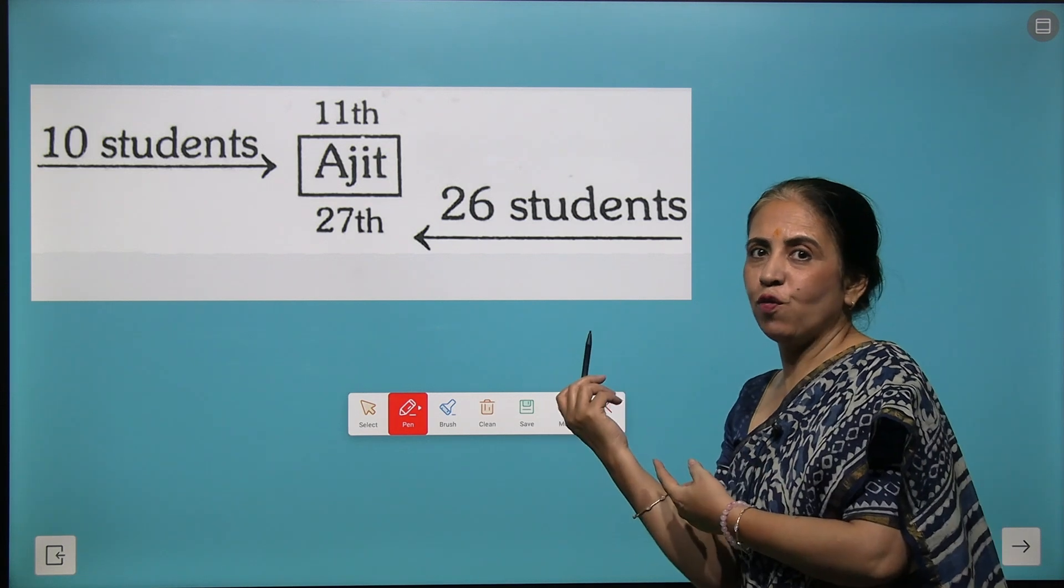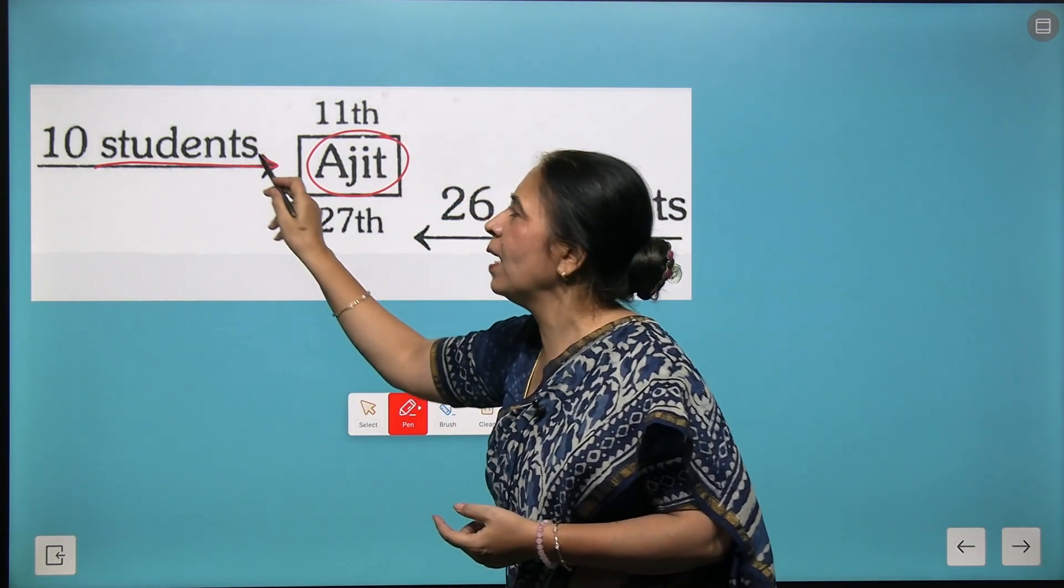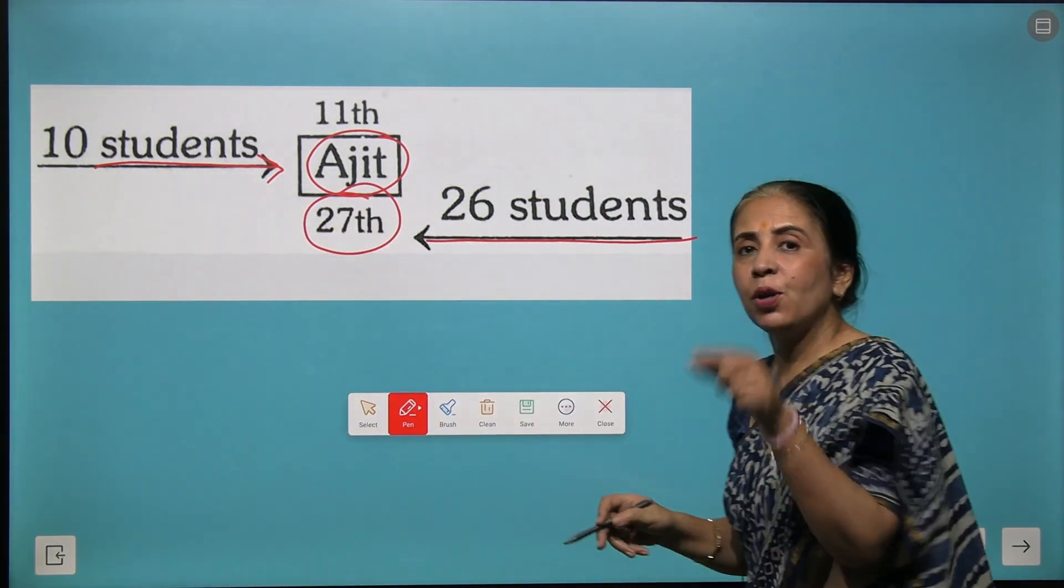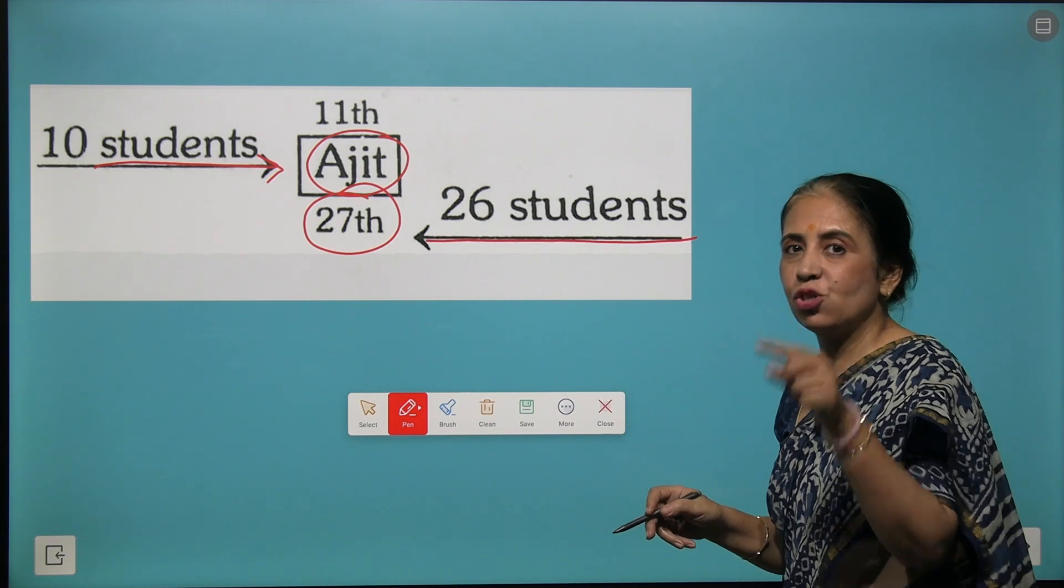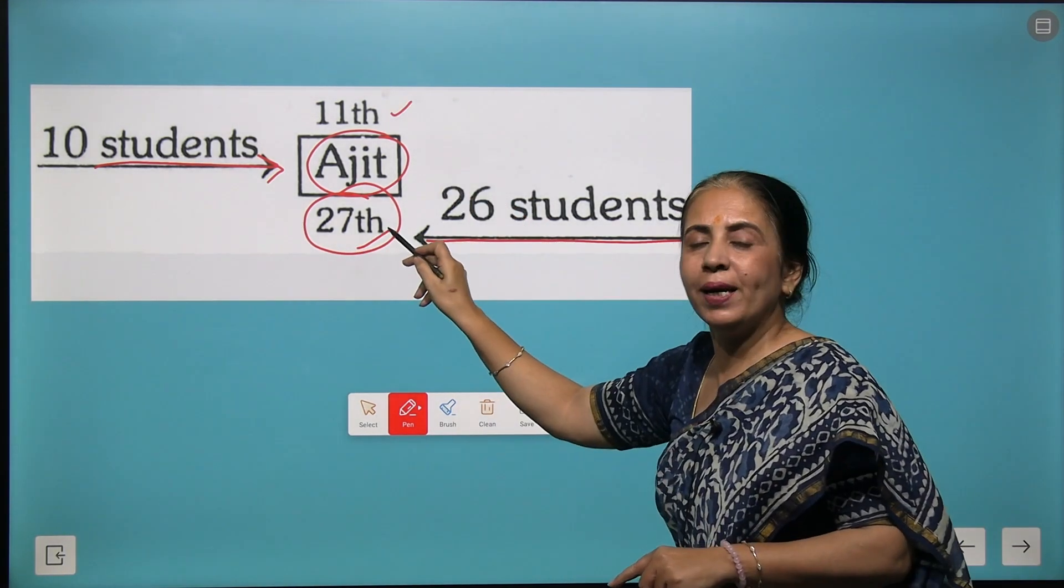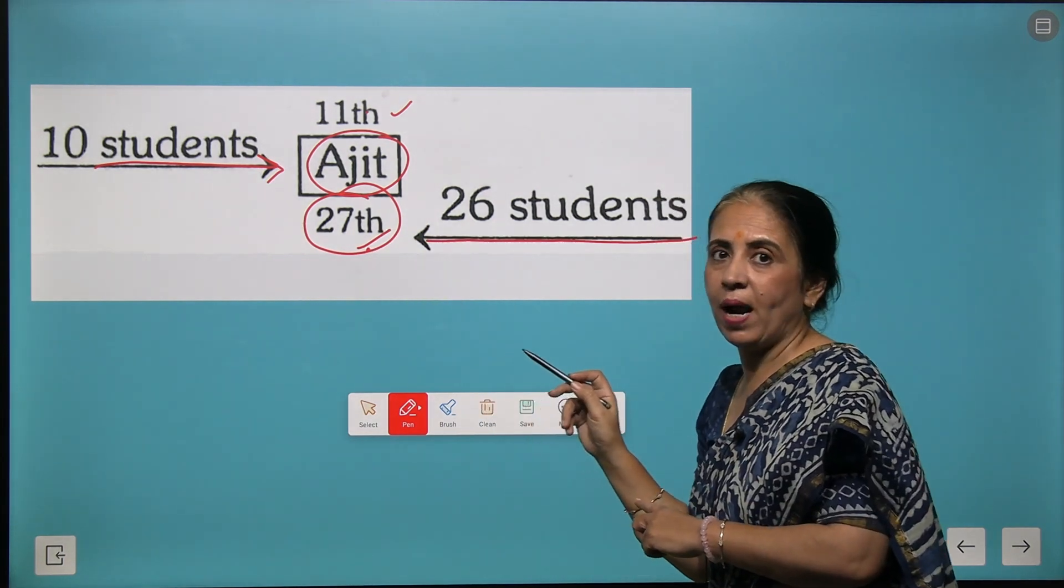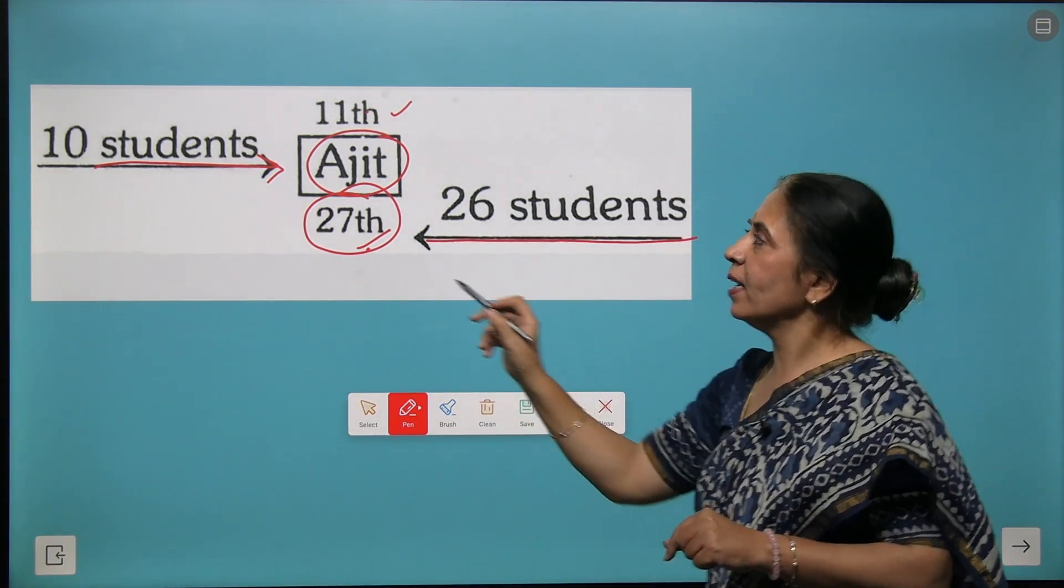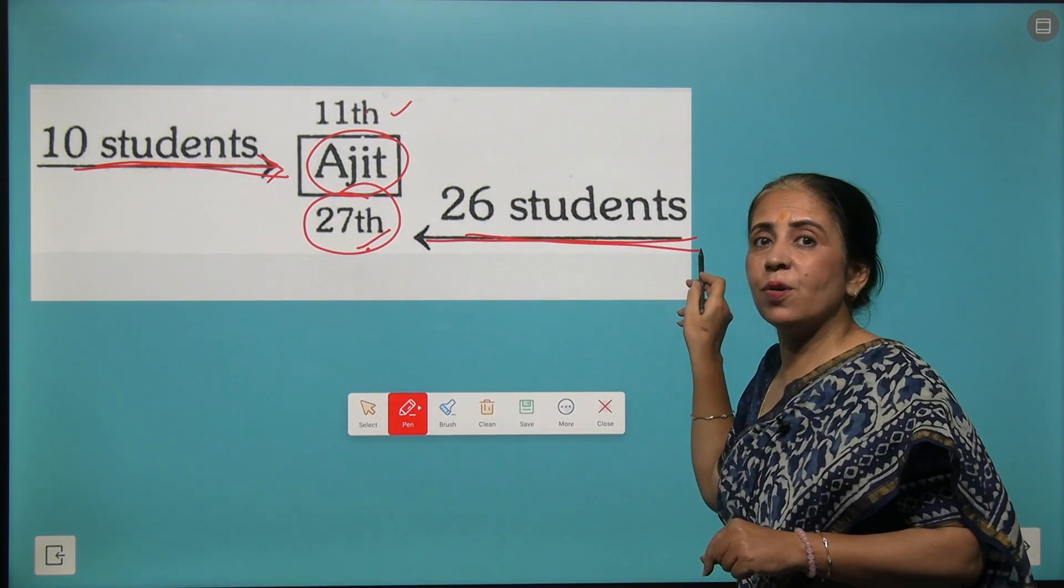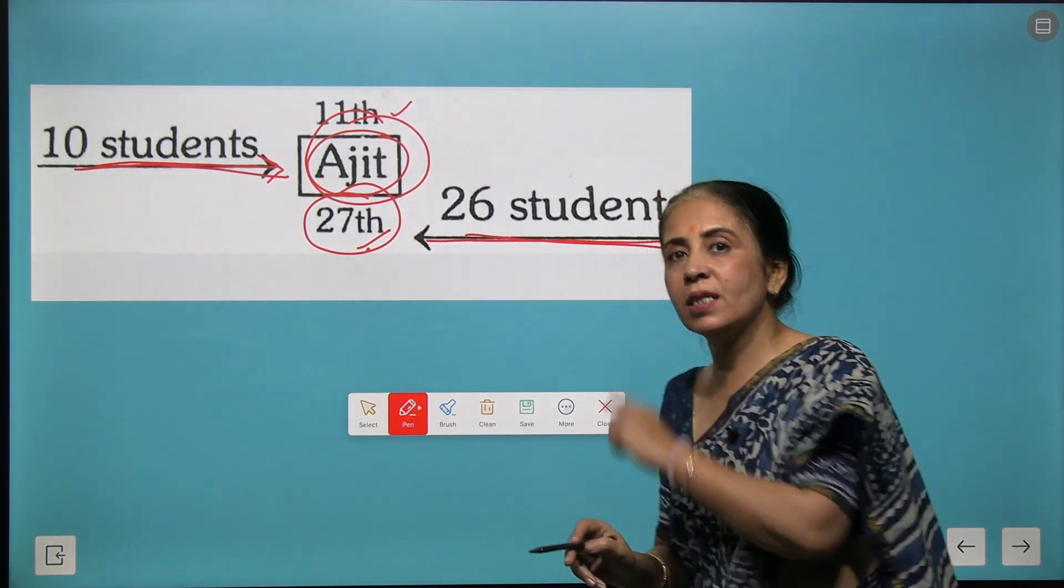Let's take the case of Ajit, who is at the 11th position from the left and at 27th position from the right. You need to know how many children are there. You can add 11 and 27, that gives you 38 minus 1, so 37 children are there. Another way to check it is we have 10 children here and 26 children here, so that makes 36 plus 1 Ajit, so this is 37.